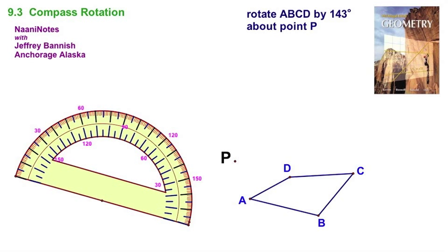You all have the handout in front of you, and we are going to rotate this quadrilateral about point P. You're going to need several instruments: a straight edge, a protractor, and a compass.